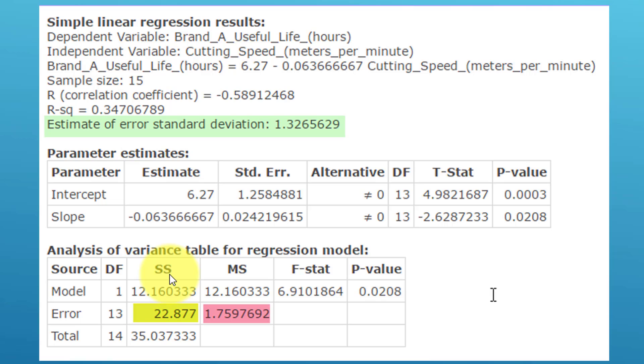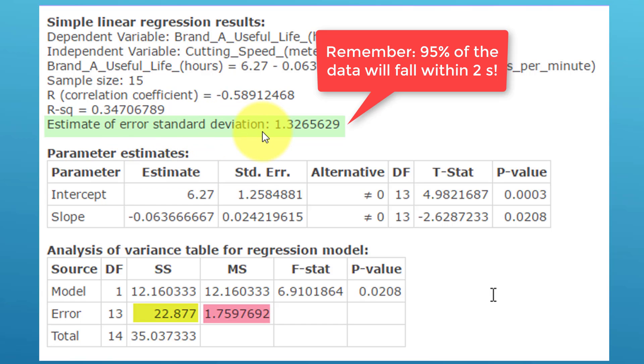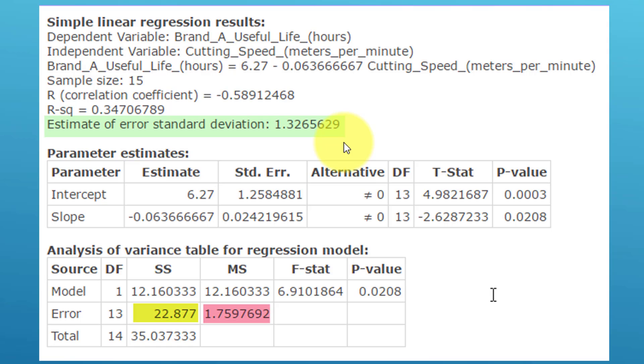You have the same information there. Here's our SSE, sum of square error. Our MSE, which is the variance, is 1.759. If we take the square root of that, we will get the estimate of the standard deviation, which is s or our standard error there in green.